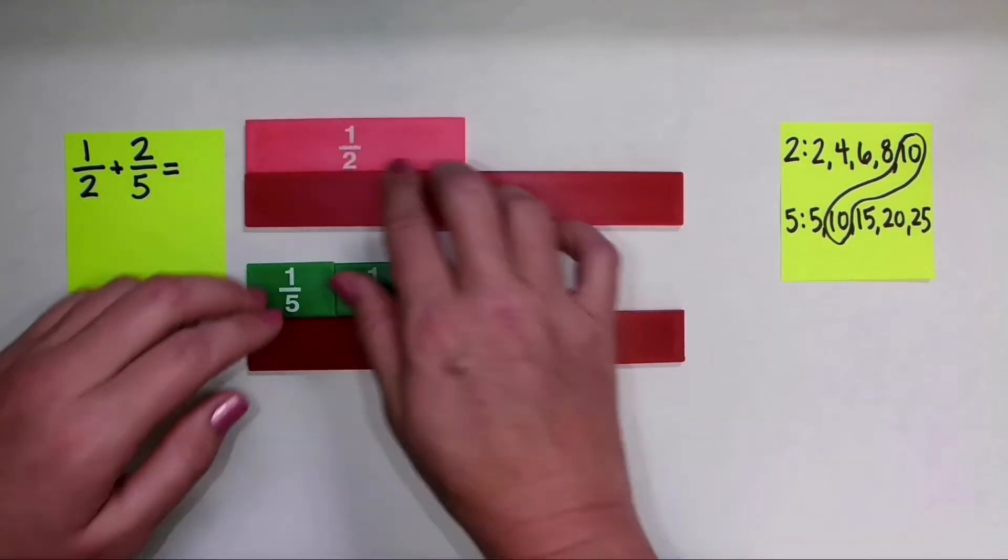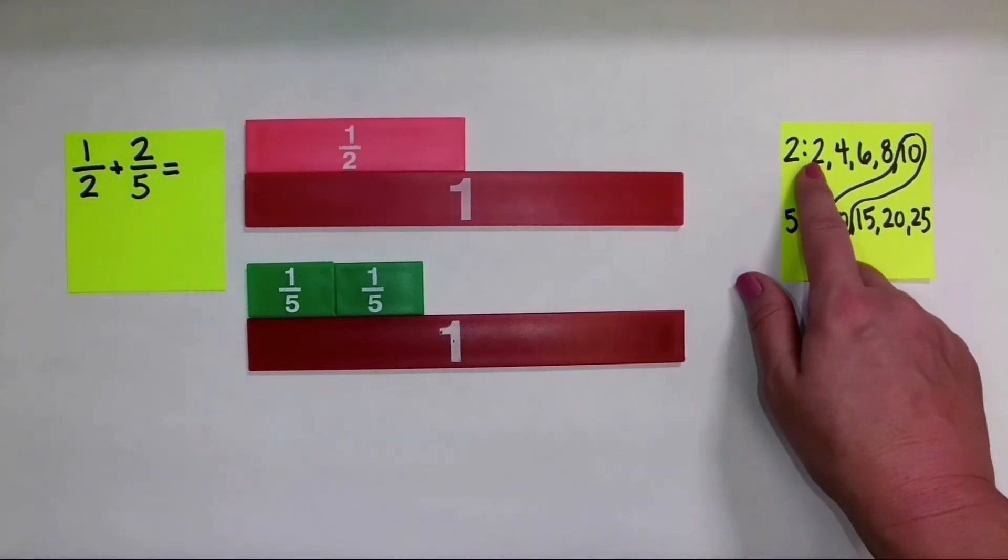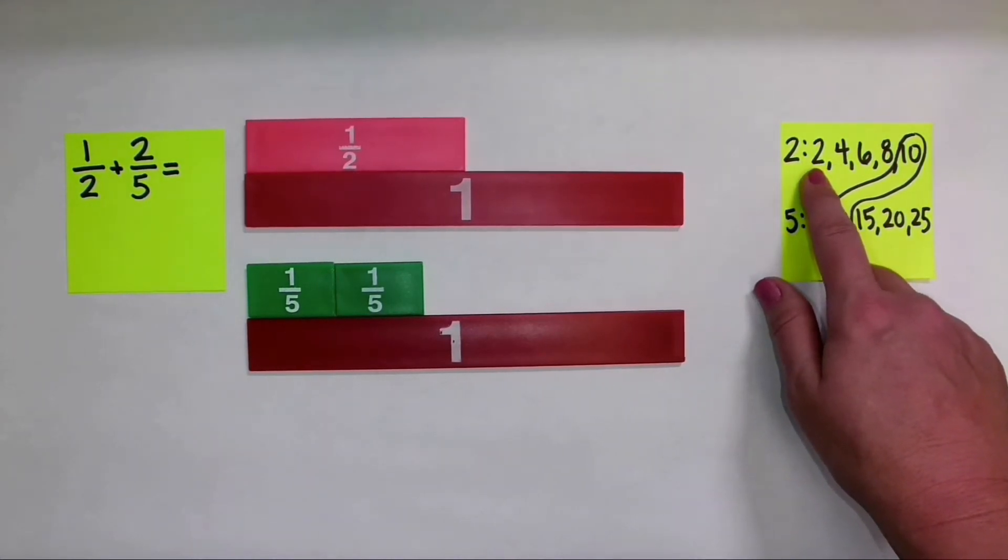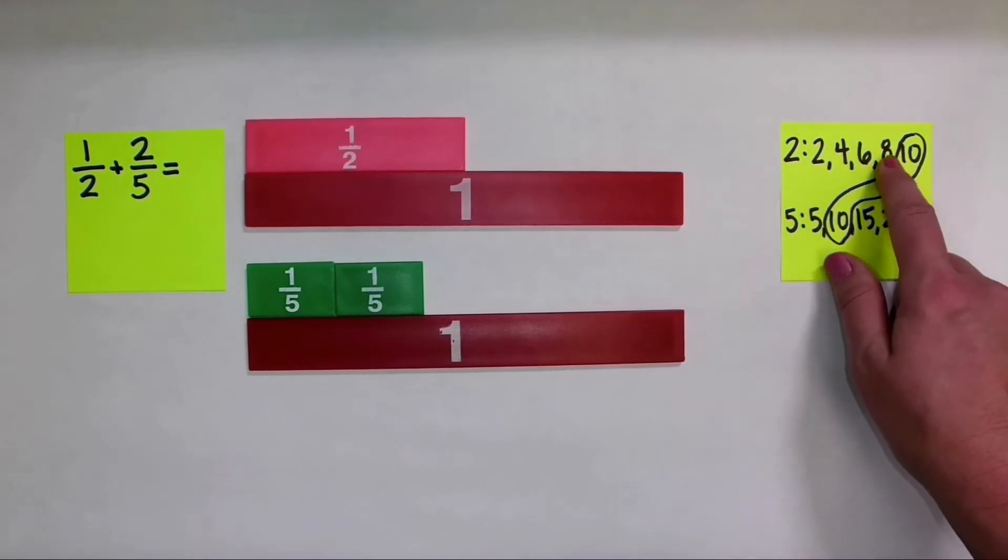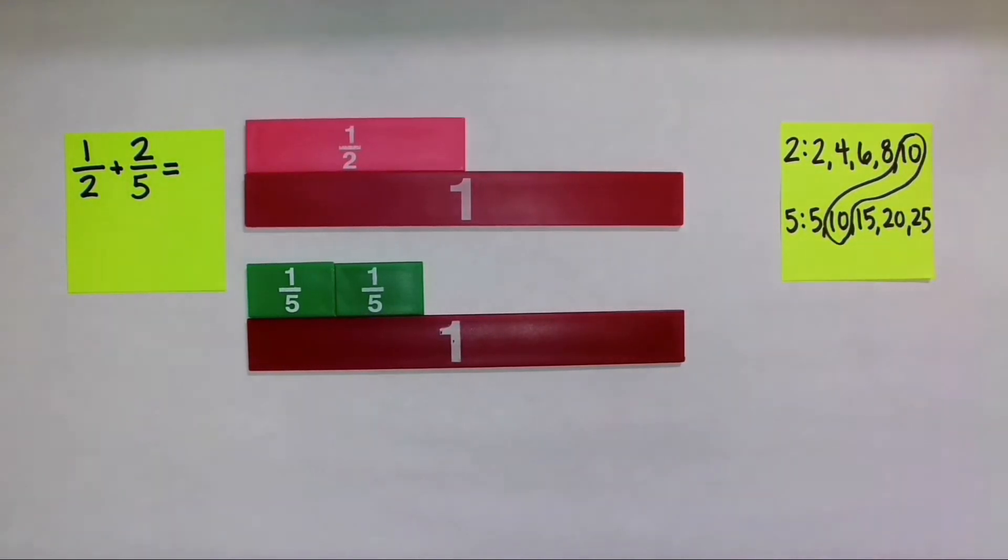So let's focus on 1 half. I can see that 1 half, to have a denominator of 10, I need to divide 1 half into 1, 2, 3, 4, 5 one-tenth pieces.